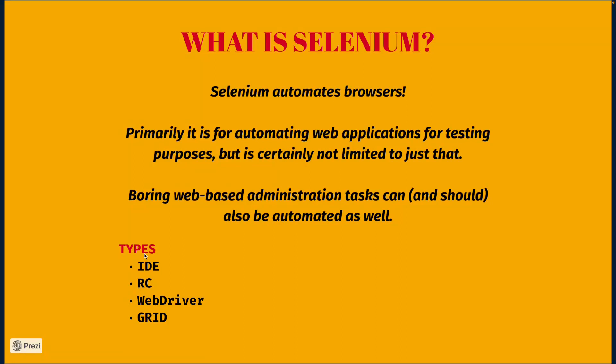Now talking about the types, there are four types of Selenium. The first one is IDE, the second is RC, third is WebDriver, and fourth is Grid. You might encounter these types at a lot of places on the internet, but the most common and most talked about — and the one we'll be covering in the entire series — will be WebDriver.